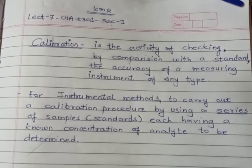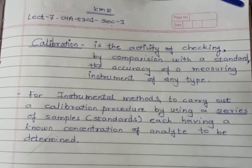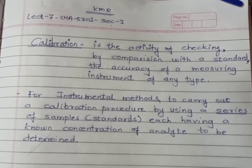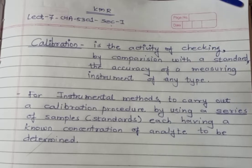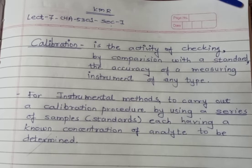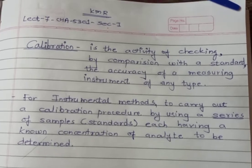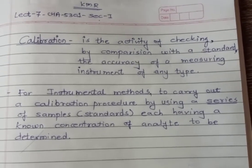For instrumental methods, you carry out a calibration procedure by using a series of standard samples, each having a known concentration of the analyte to be determined. That means you performed various experiments on the colorimeter, on the conductimeter, on the potentiometer of the standard solutions. Initially, you will prepare a series of standard solutions like 0.1 molar, 0.2 molar, 0.3 molar, and so on.